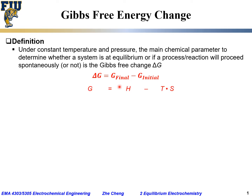Hopefully you remember from your thermodynamics class that Gibbs free energy, by definition, is H minus T times S. G means Gibbs free energy. H is enthalpy — this word essentially means heat in this process. T, of course, is temperature. S in thermodynamics quite often means entropy, a measure of randomness or order in the system. This is the thermodynamic definition for Gibbs free energy.